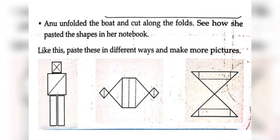Anu unfolded the boat and cut along the folds. See how she pasted the shapes in a notebook. Here we can make different shapes using the unfolded boat, using the 4 rectangles and 8 triangles.